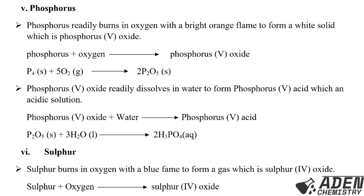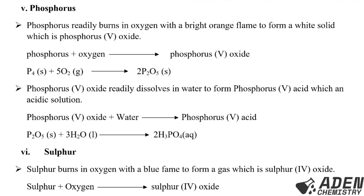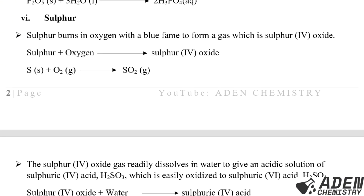Phosphorus(V) oxide readily dissolves in water to form phosphorus(V) acid, also called phosphoric acid, which is an acidic solution. The word equation: phosphorus(V) oxide plus water gives phosphoric acid. The balanced chemical equation: one mole of phosphorus(V) oxide reacts with three moles of water giving two moles of phosphoric acid (H₃PO₄). The sixth element is sulfur.